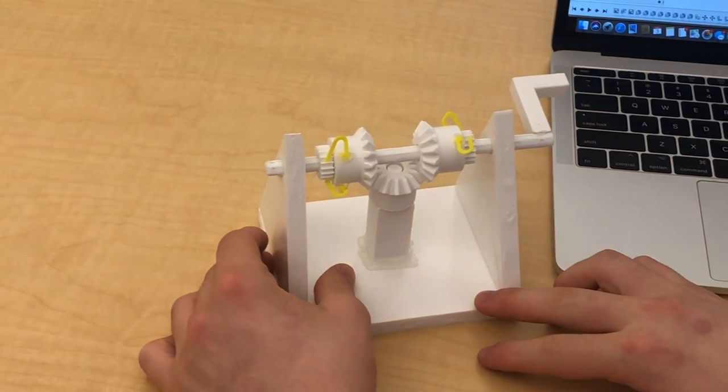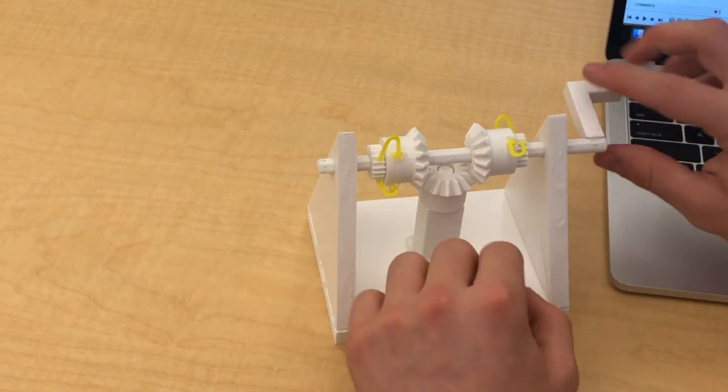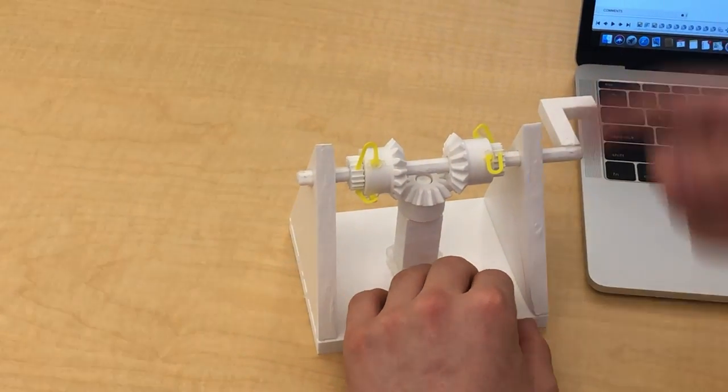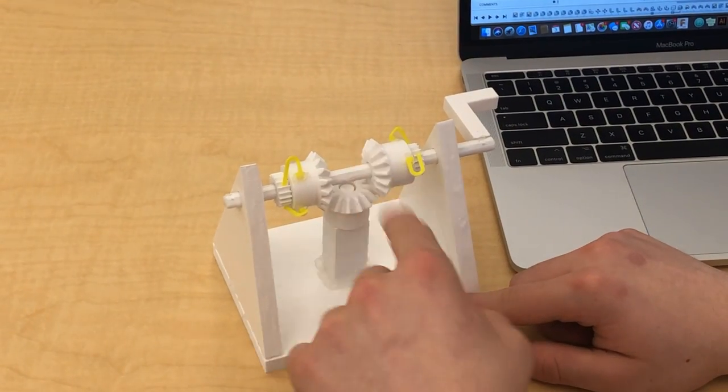The way it works is that the ratchets are attached to the shaft, so no matter how it turns, the ratchets are always going to rotate. But the bevel gears are not. They theoretically move free.